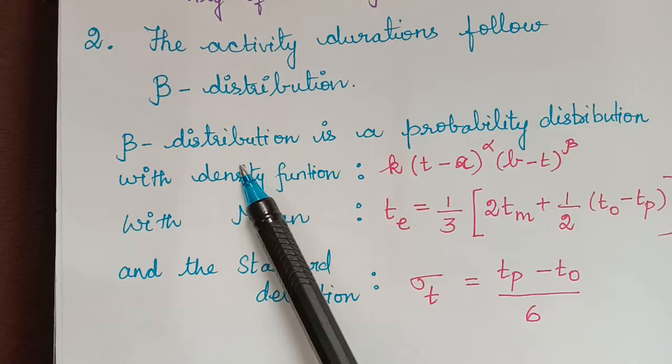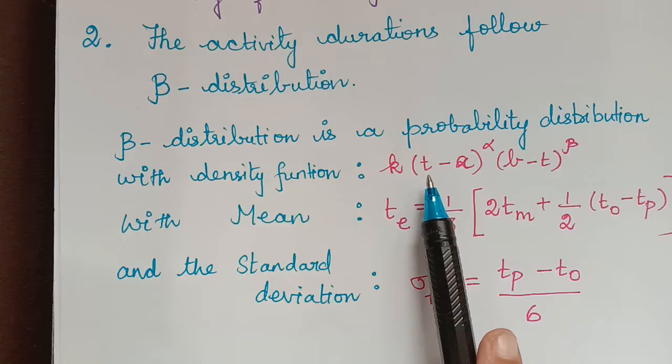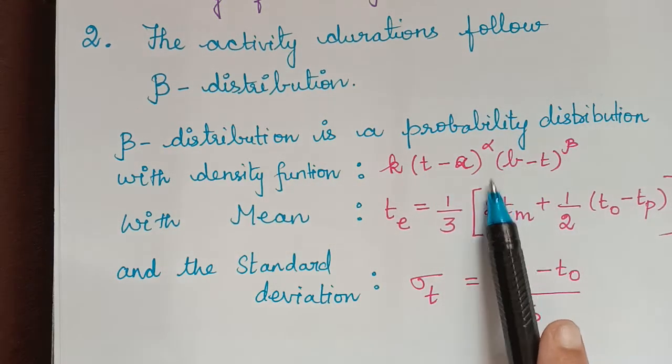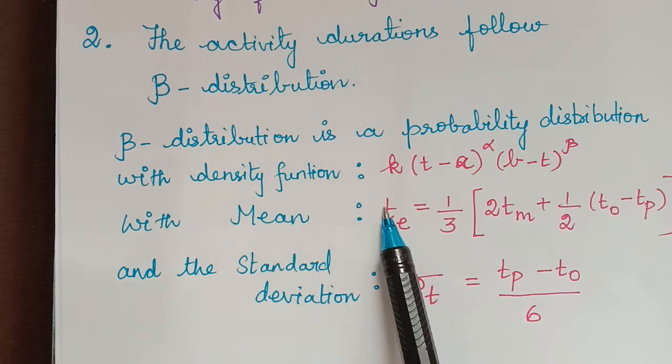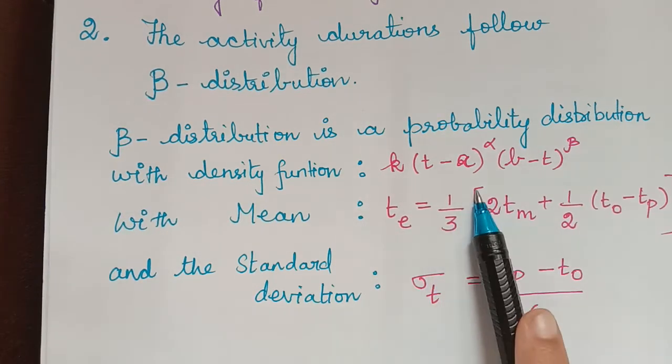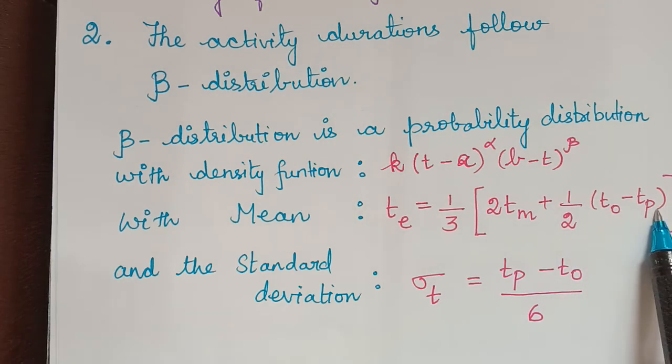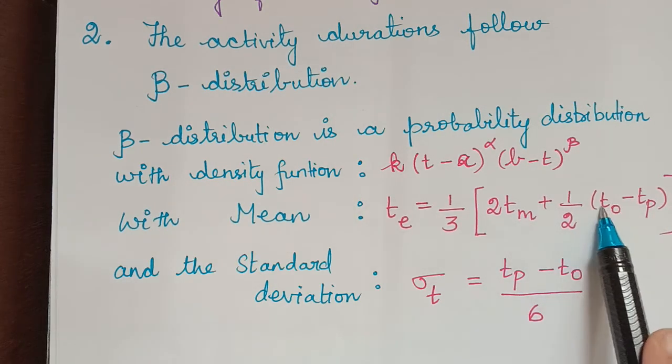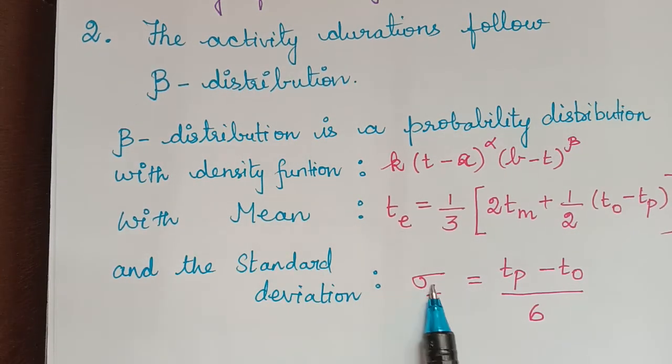So what is this beta distribution? It is a probability distribution with density function k(t-a)^α(b-t)^β. And the mean of beta distribution is te = (1/3)(2tm) + (1/2)(to-tp), where to stands for optimistic time, tp stands for pessimistic time, and tm stands for most likely time. And the standard deviation is given by σt = (tp-to)/6.